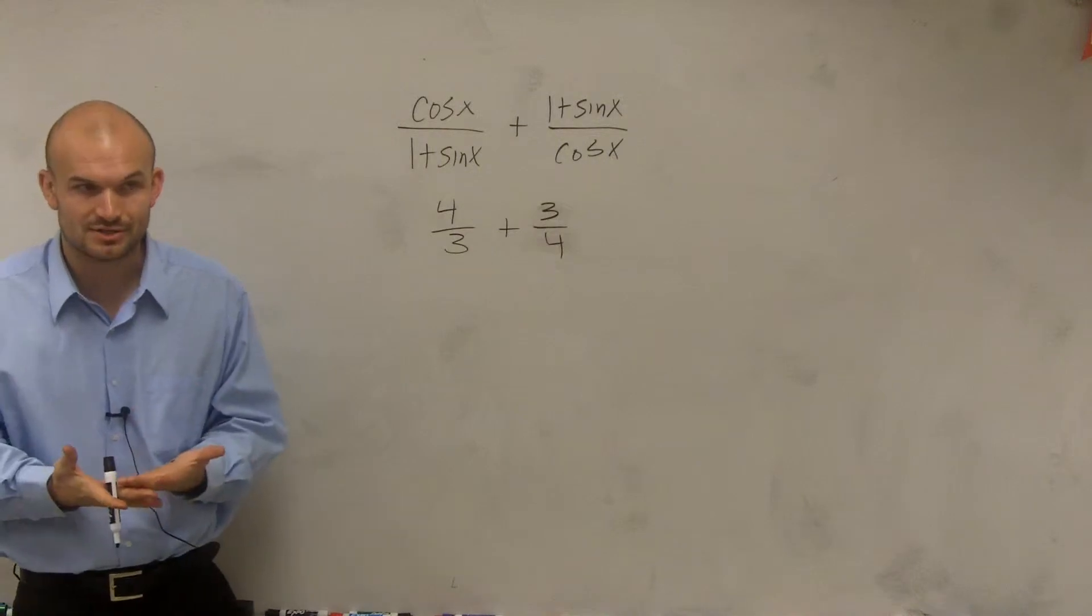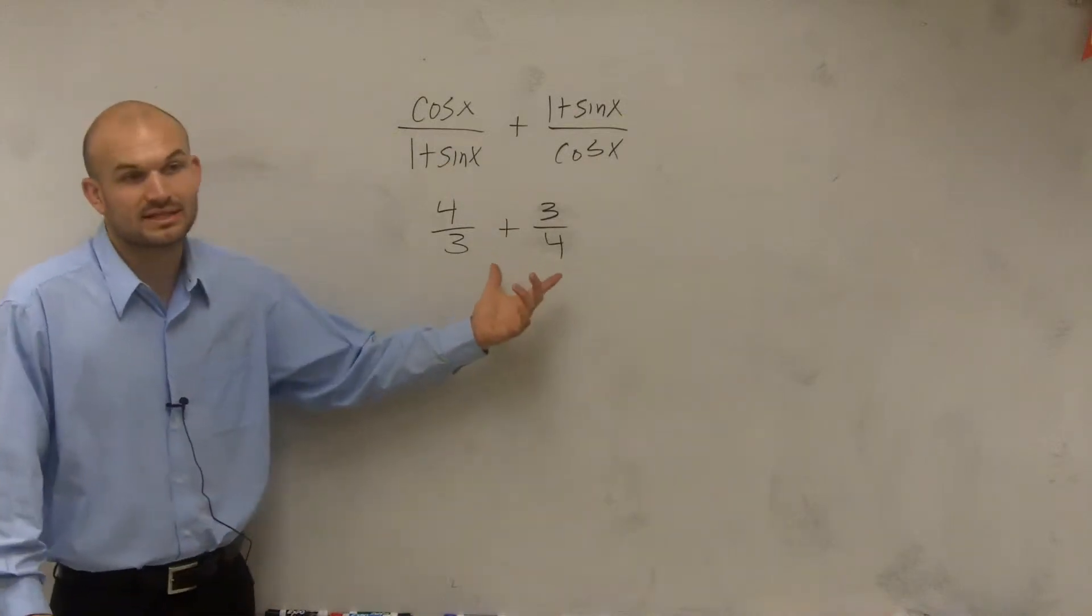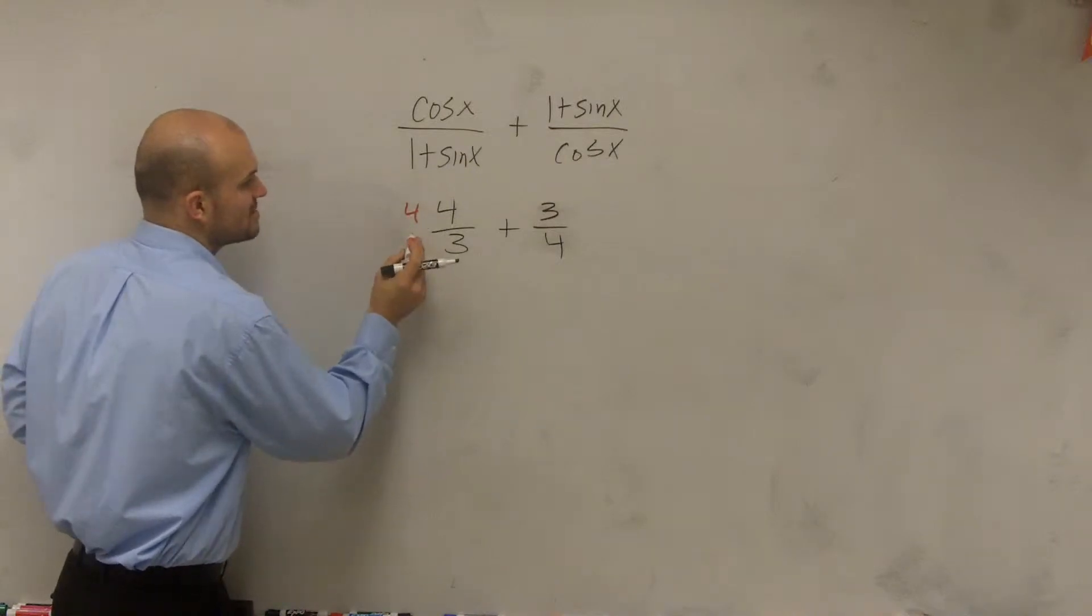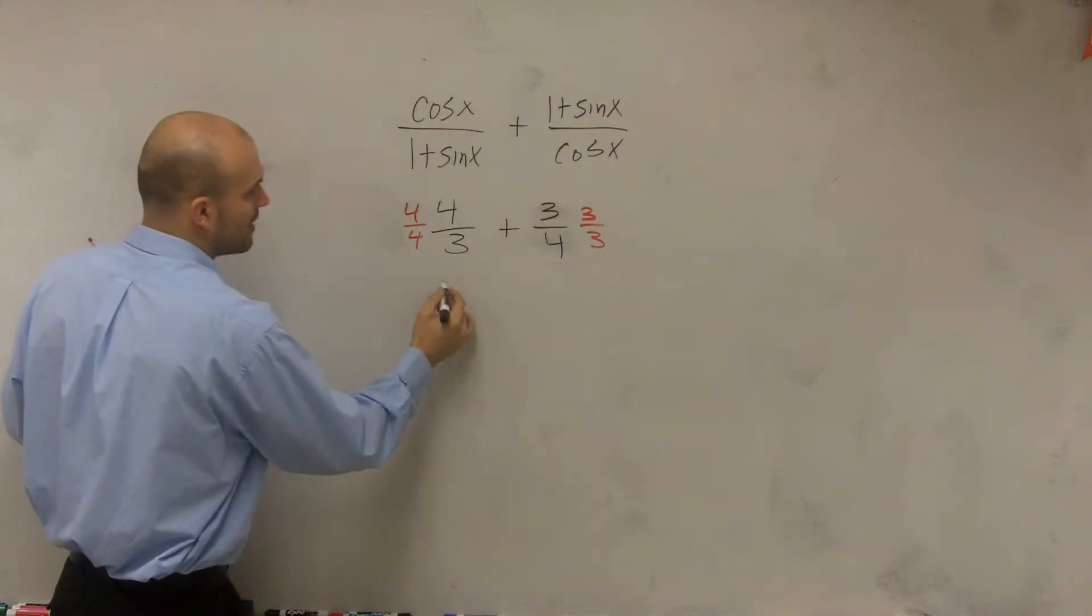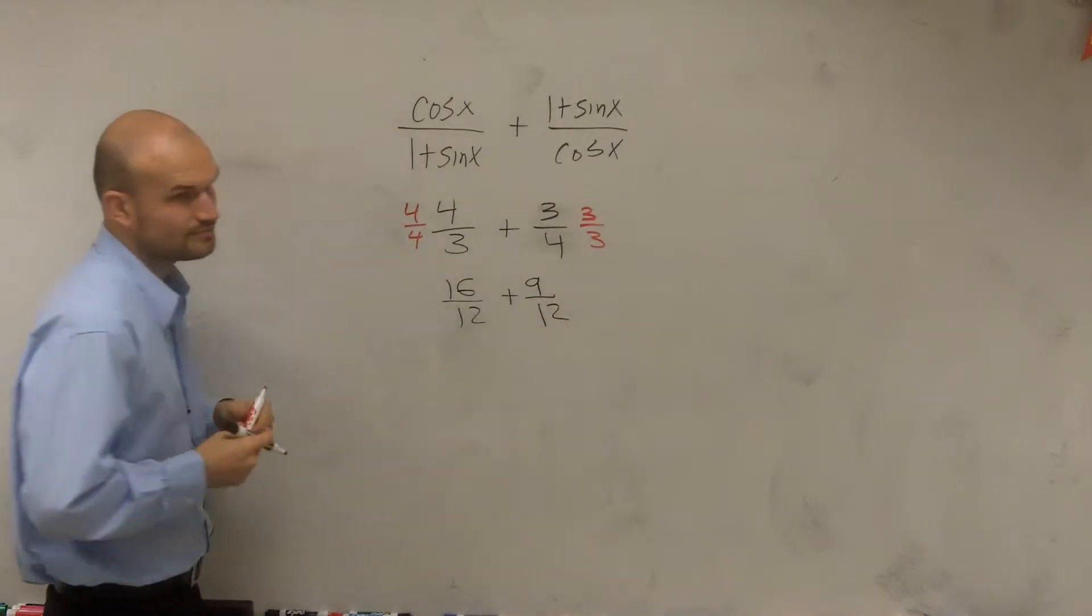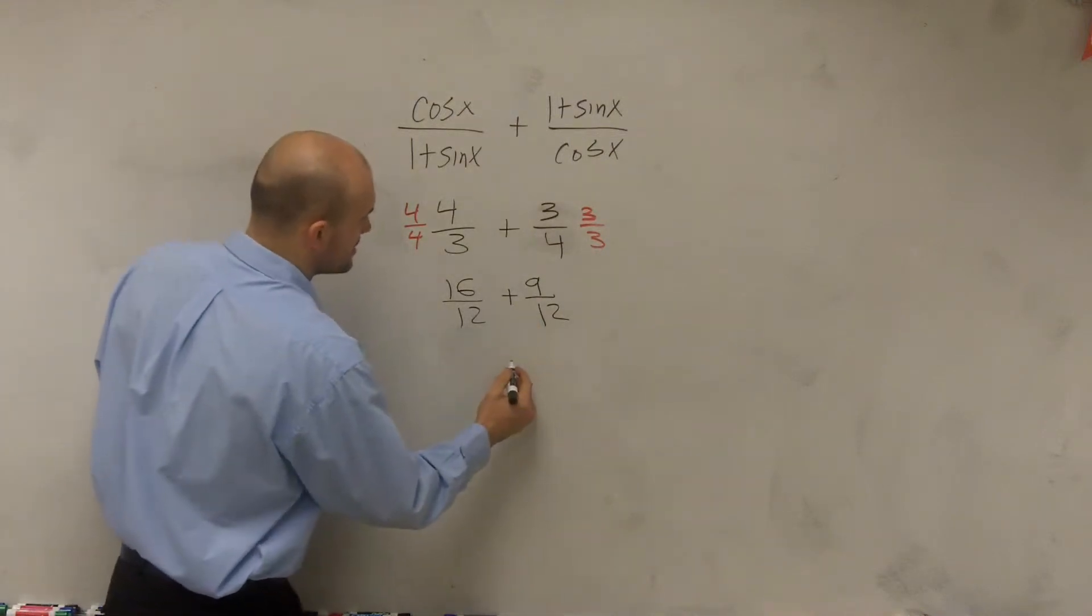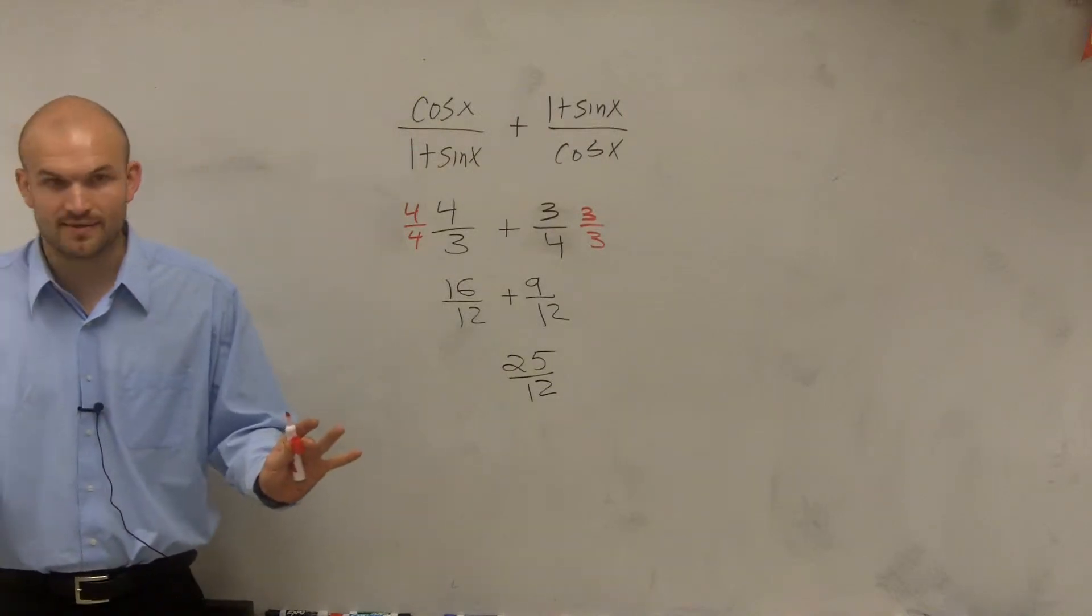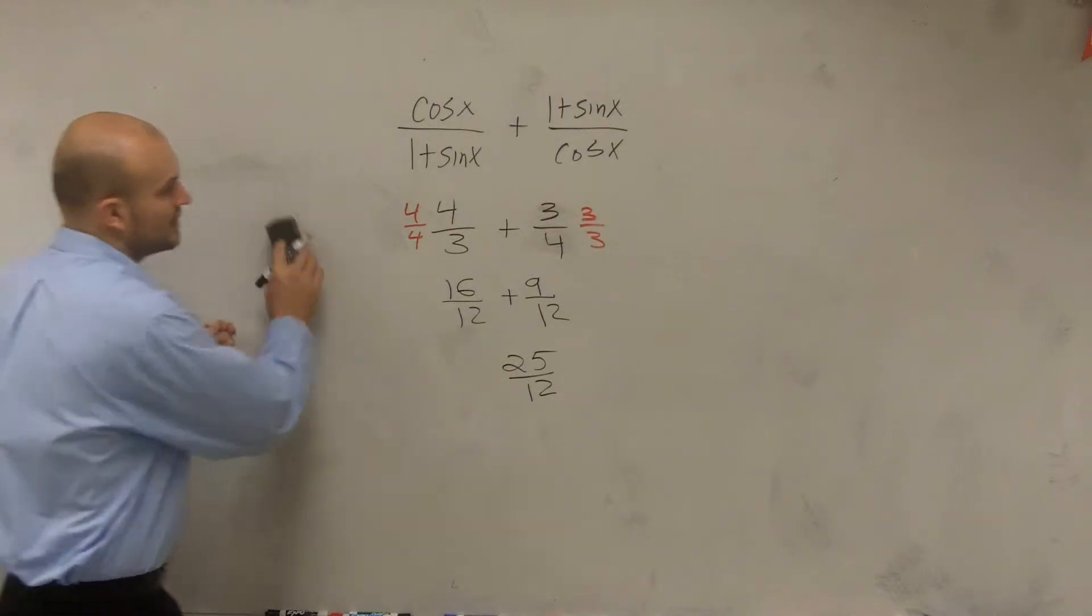Well, remember when adding fractions, you have to have the same denominator. So I'll find the least common multiple between the denominators, which ends up being 12. That means I need to multiply this fraction by 4 over 4 and this fraction by 3 over 3. Therefore, I obtain 16 over 12 plus 9 over 12. Now that I have them with the same denominator, I can combine them to give me 25 over 12. We're all good on that, right? Okay, so now we're going to get into more difficult.